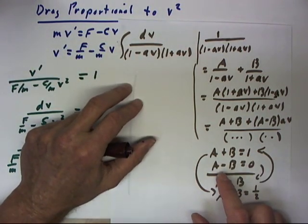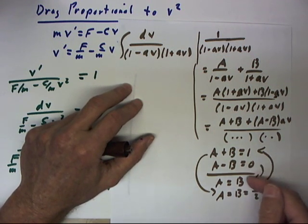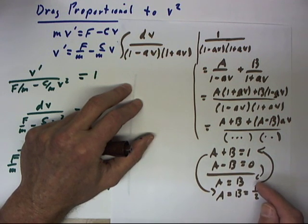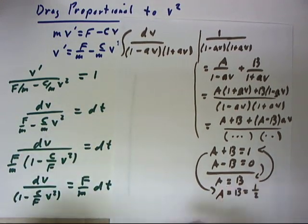So A plus B is 1, A minus B is 0. Our conclusion A equals B comes from the second equation very easily. Plug that result back into the first equation and we get A equals B equals 1 half.